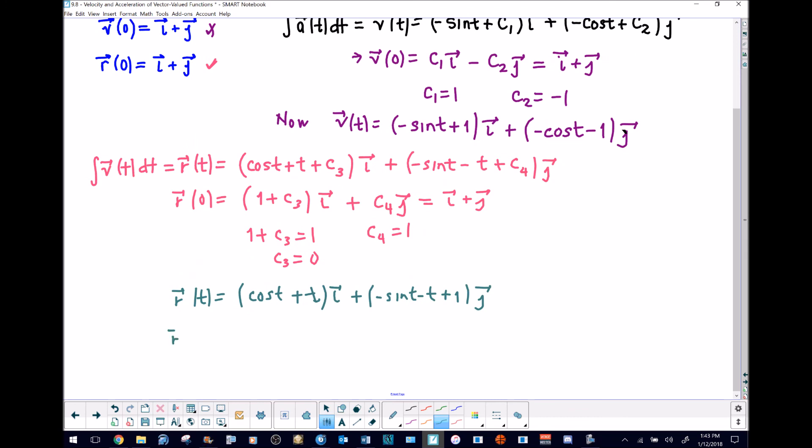We just plug pi in for t. Cosine of pi is negative one, then add pi, so pi minus one times i. If we plug pi in for t over here, negative sine of pi is zero, minus the t which is minus pi, plus one, all multiply by j.